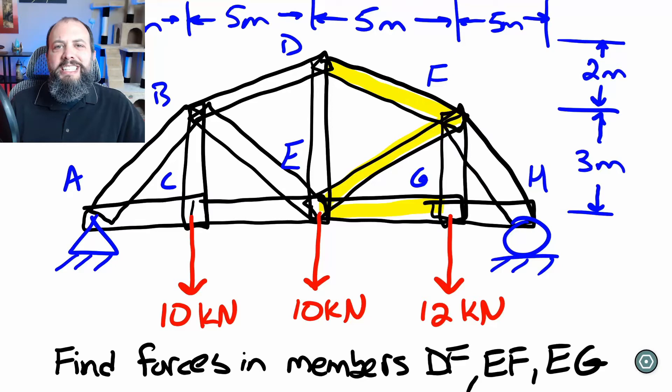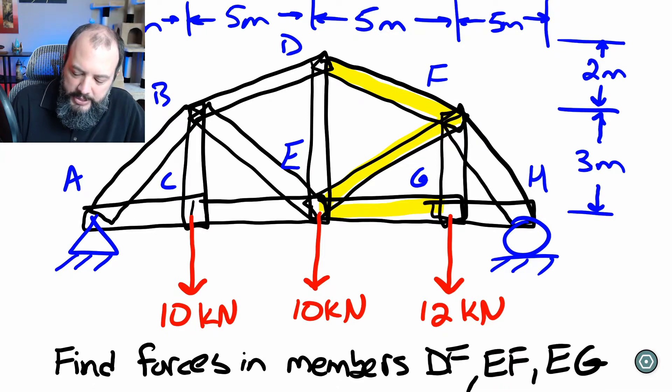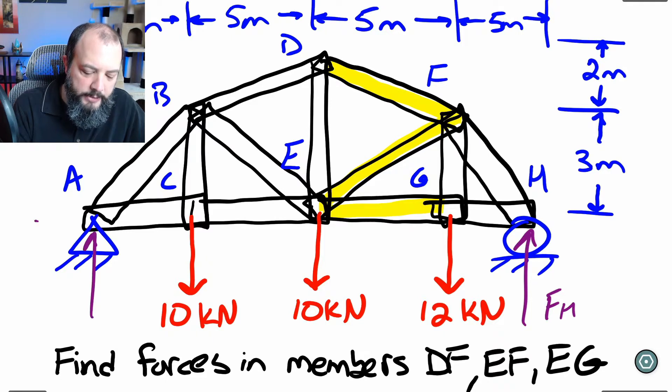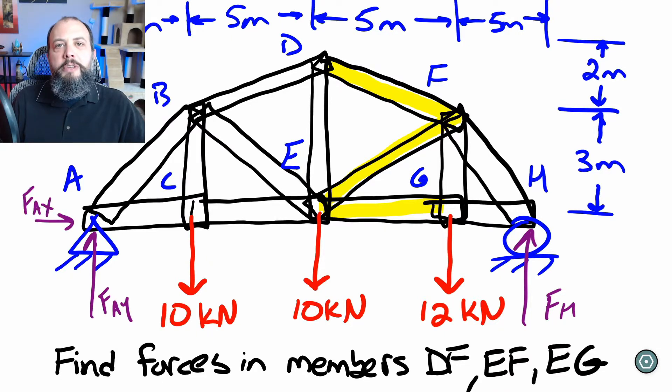Before we get into the differences between joints and sections I want to point out that they do both start the same way and that is by finding reaction forces. For this truss in particular we're going to be interested in that reaction force at H at the roller joint in the vertical direction and then the pin at A is going to have forces in both the X and Y directions. Then once you have solved for these reaction forces that's when your solution path will differ.